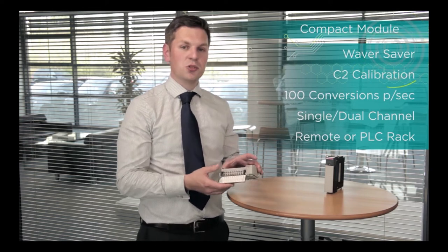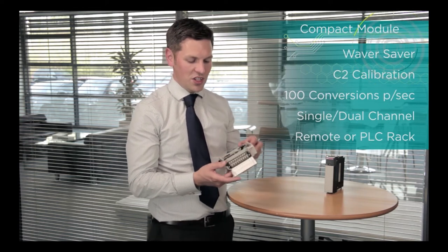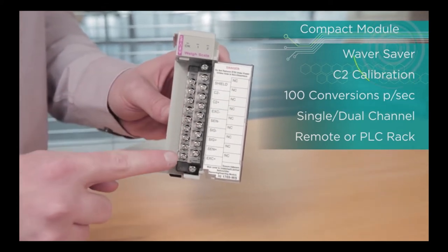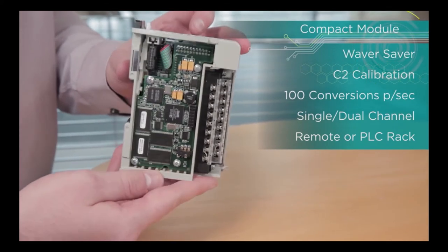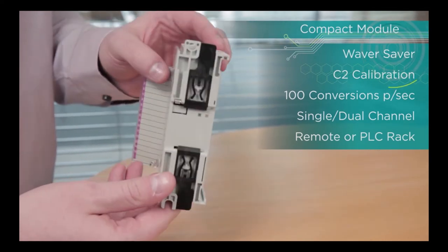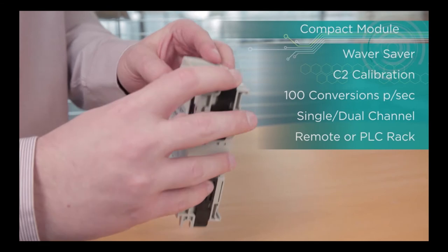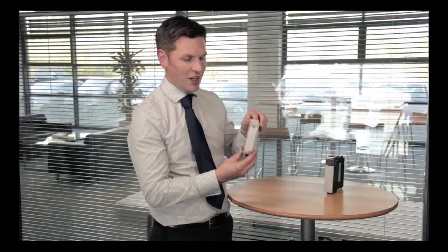This one does 100 conversions a second and it's actually available in two different formats. You can get one with one set of inputs for a load cell or one with two. This is one we commonly use in Compact Logix and it can be used in a remote rack if you want to, or in a PLC rack.